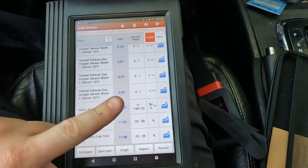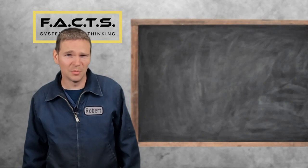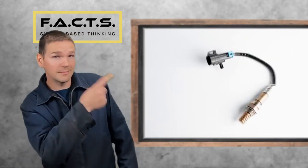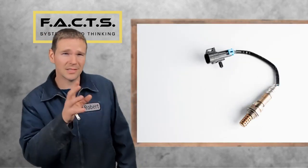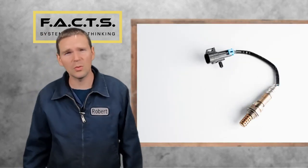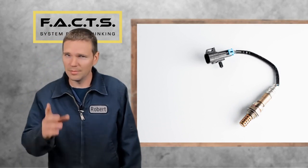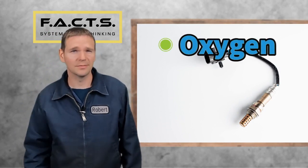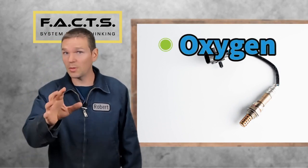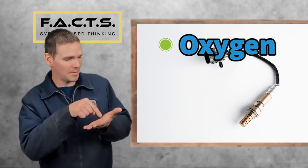Let's go to the classroom and I'll show you why having the exhaust restricted would cause a reverse or a flip - one bank positive, one being negative. Welcome to the classroom. This is an oxygen sensor. Oxygen sensors are a pretty cool piece of technology, but they only sense one thing: oxygen. That's an important fact to keep in mind.